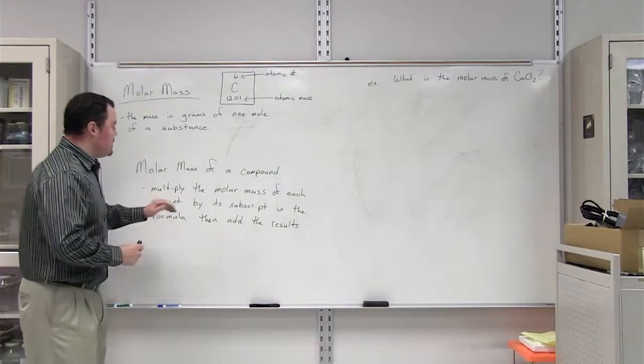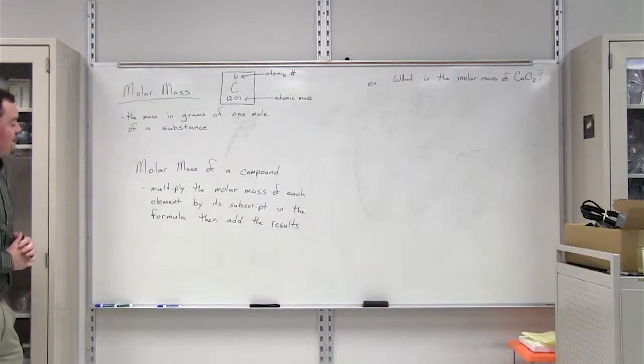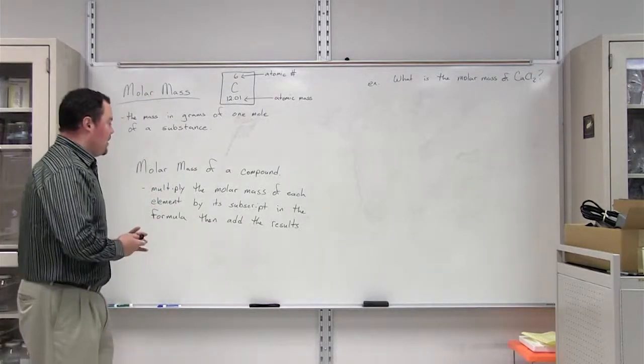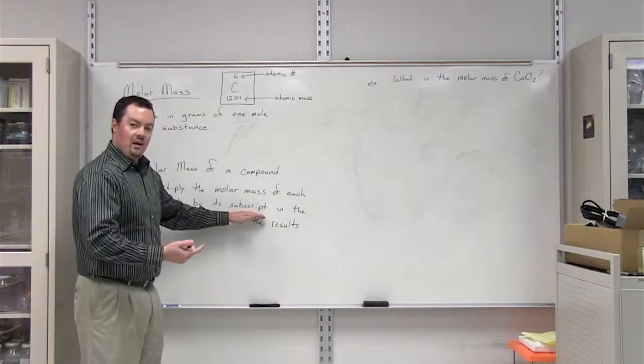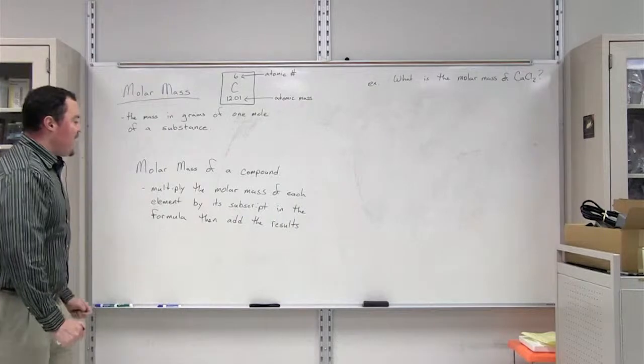In order to do this, we have to multiply the molar mass of each element in the compound by the subscript for that element, and then we're going to add the results.